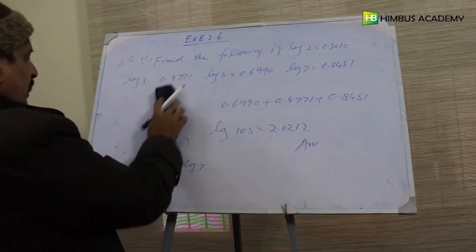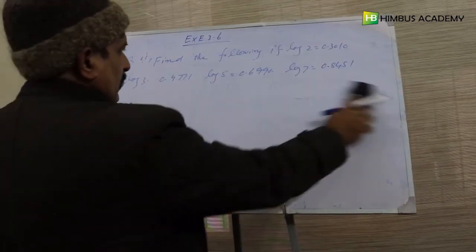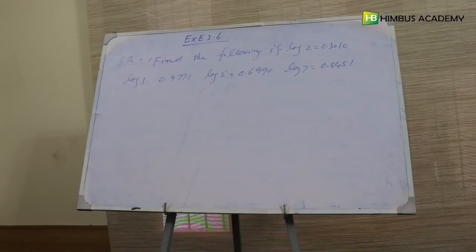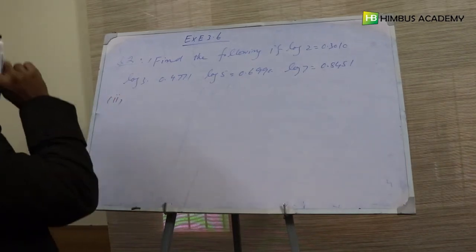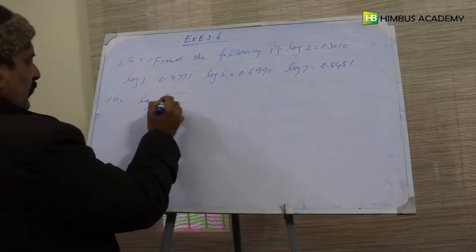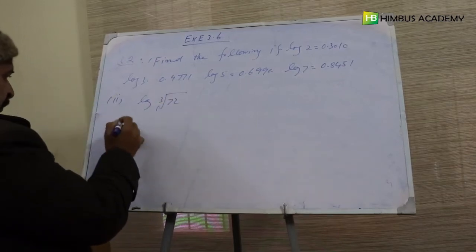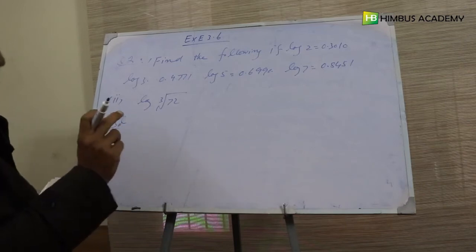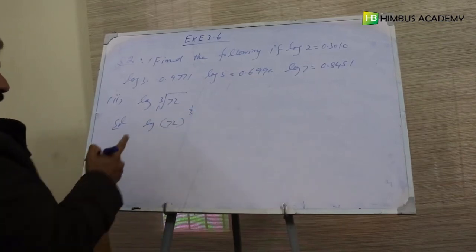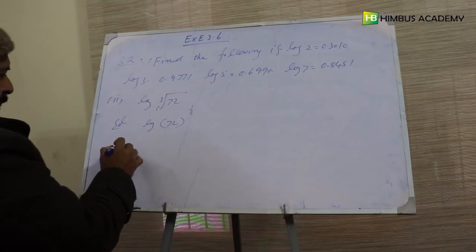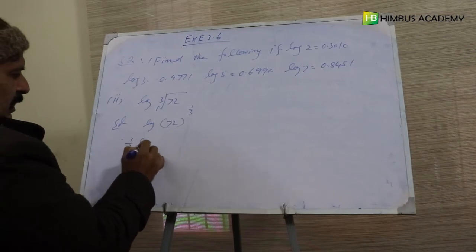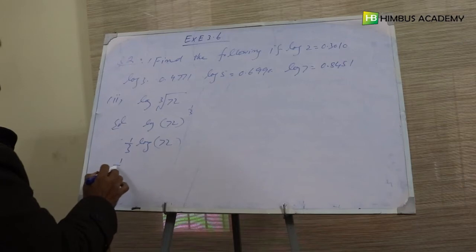Question 2 کا second part: log of third root of 72. Solution: third root کا مطلب ہے log of 72 raised to the power one over three. فارمولا: log of m power n equals n log of m۔ So this becomes one over three times log of 72.